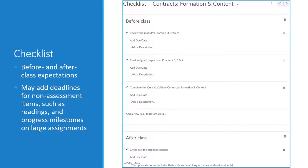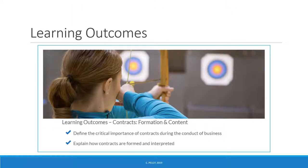Making those deliverables a checklist item is an easy way to associate a due date with them. The due date then appears in the student's newsfeed and calendar. A learning outcomes page identifies the student's goals in studying the module. Here too, the Brightspace template is used in combination with a stock photo and a checklist, making the page visually engaging.